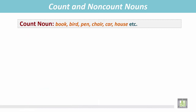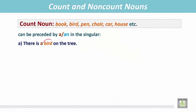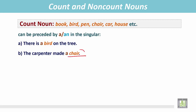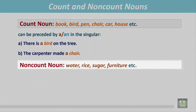Count nouns in the singular form can be preceded by 'a' or 'an.' For example, 'there is a bird on the tree' — bird is a countable noun, so we put 'a' before it. Similarly, 'the carpenter made a chair' — chair is a countable noun so it is preceded by 'a.'